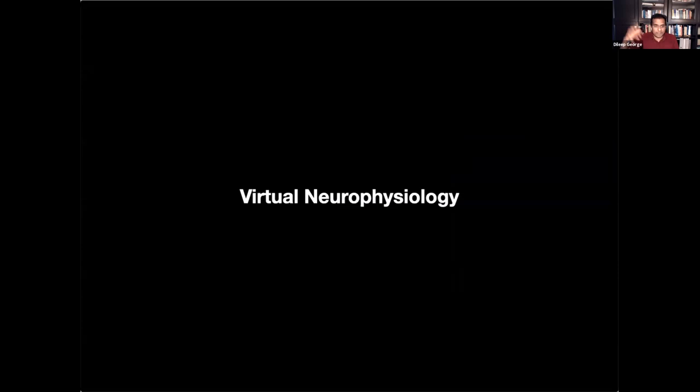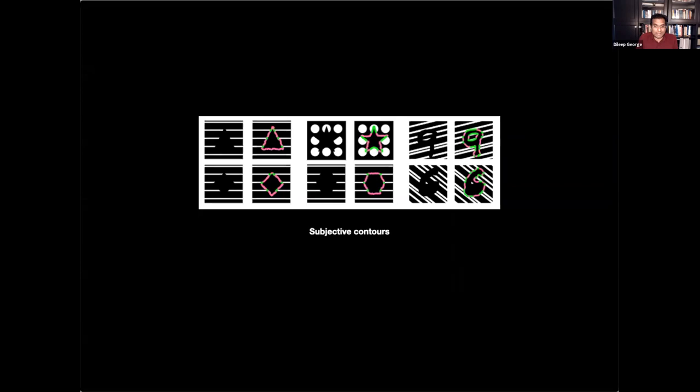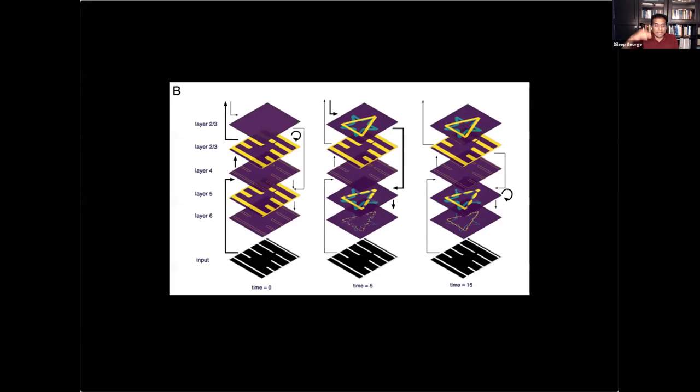So you can simulate things like subjective contour effects where you're given these illusions, but you see contours where it doesn't exist. For example, all the magenta portions of these contours are hallucinated by your brain and also by our system. And you can also study the dynamics of that on, which layer of the cortex will turn on and turn off at what time during the inference of this subjective contour effect.